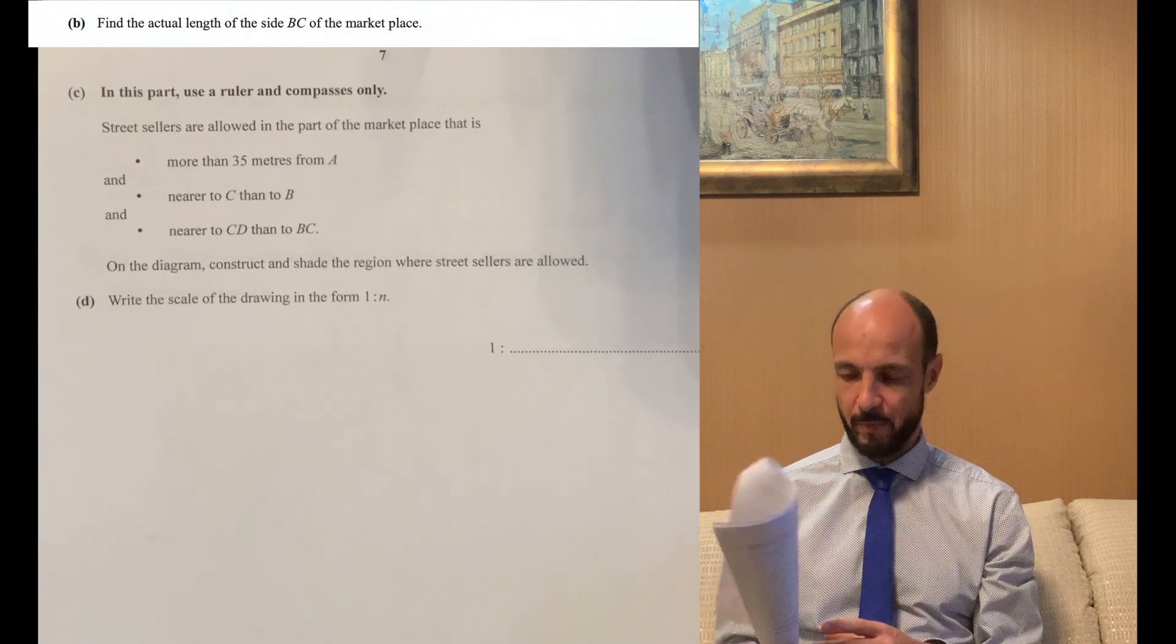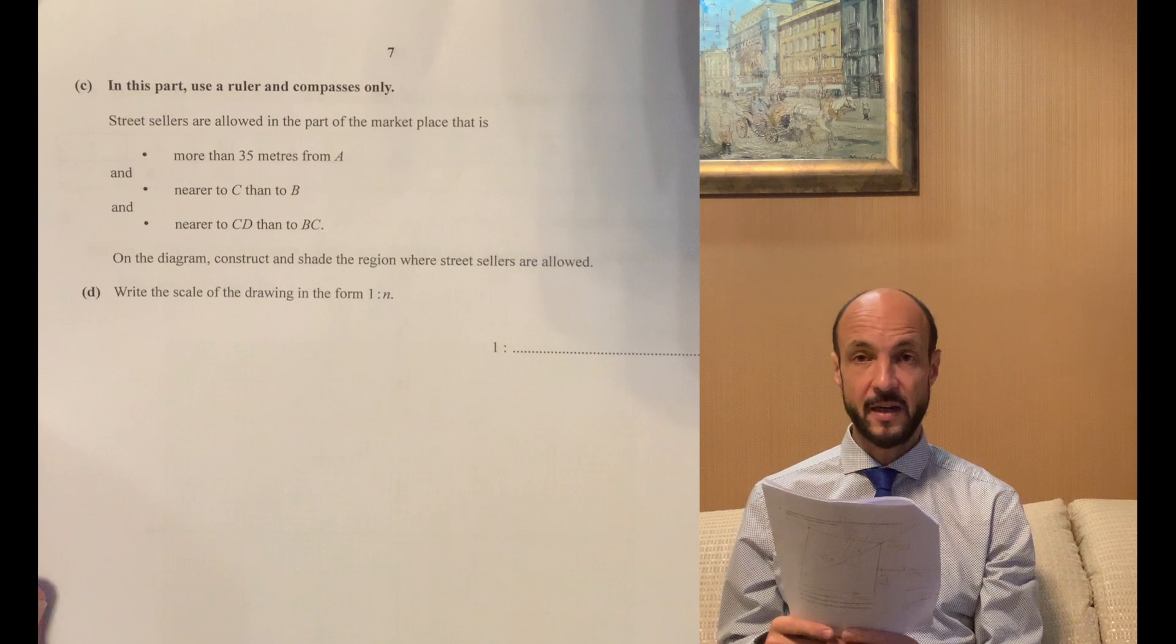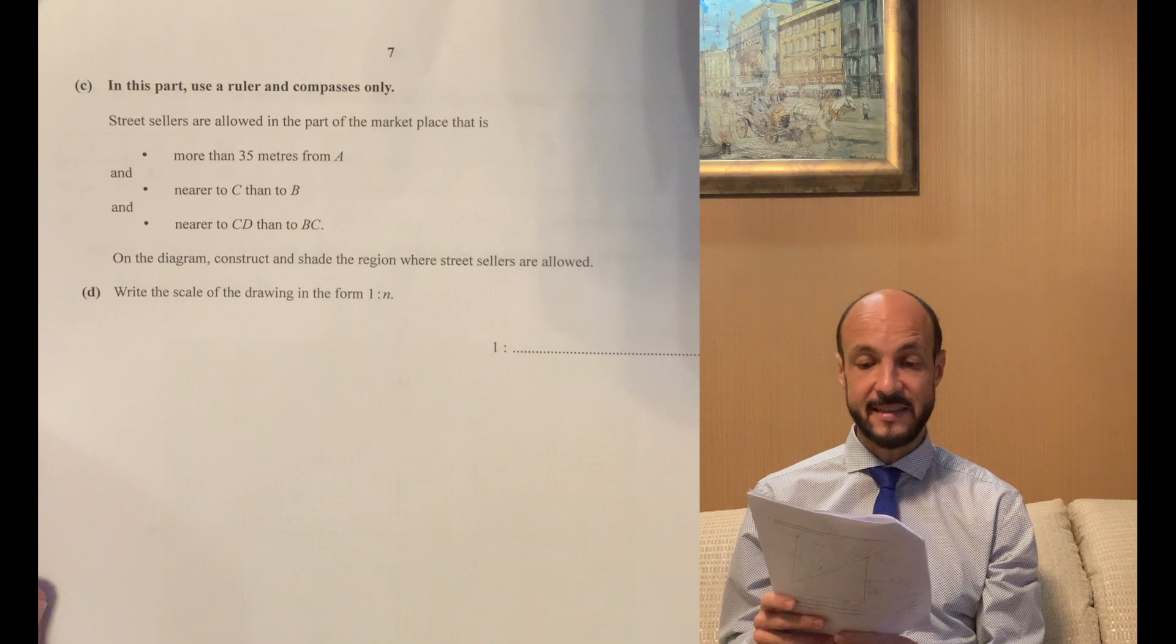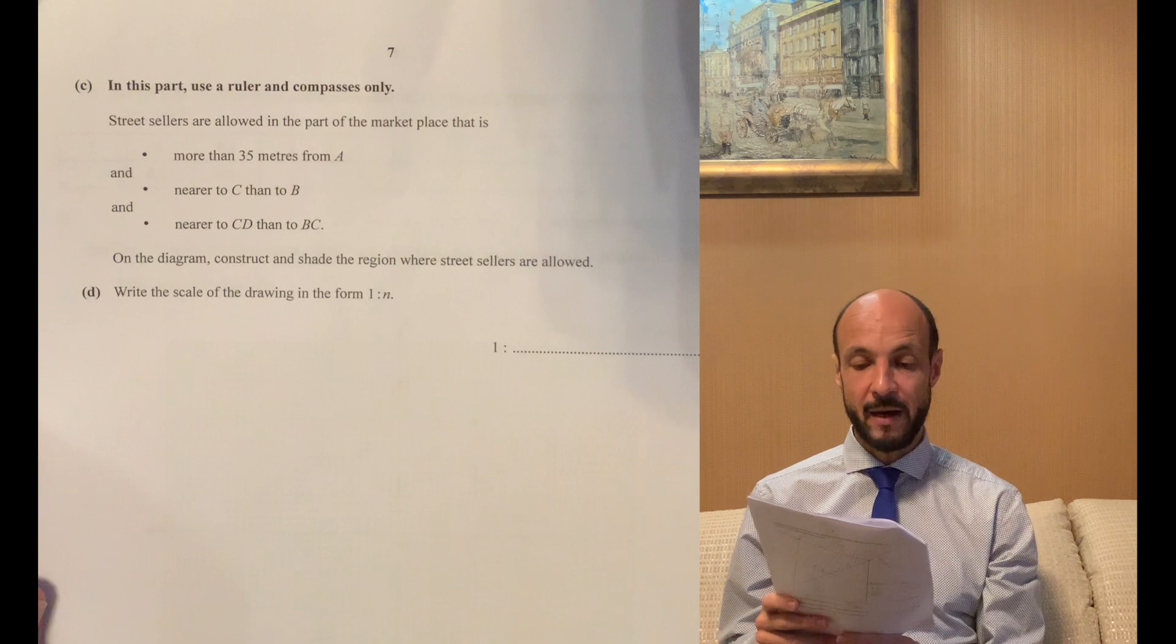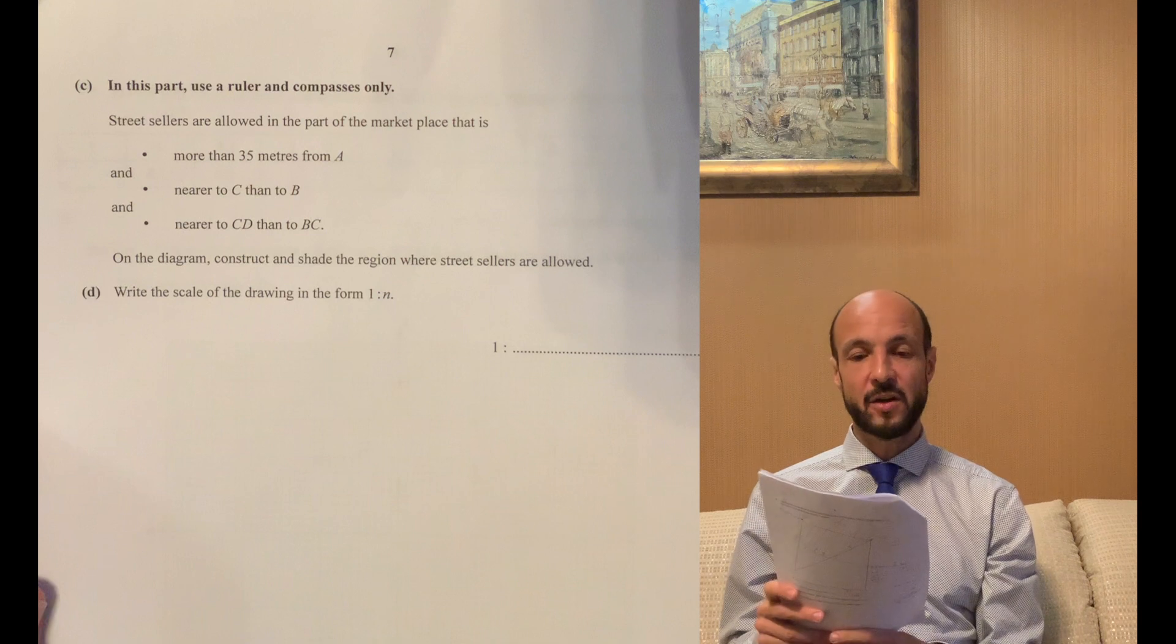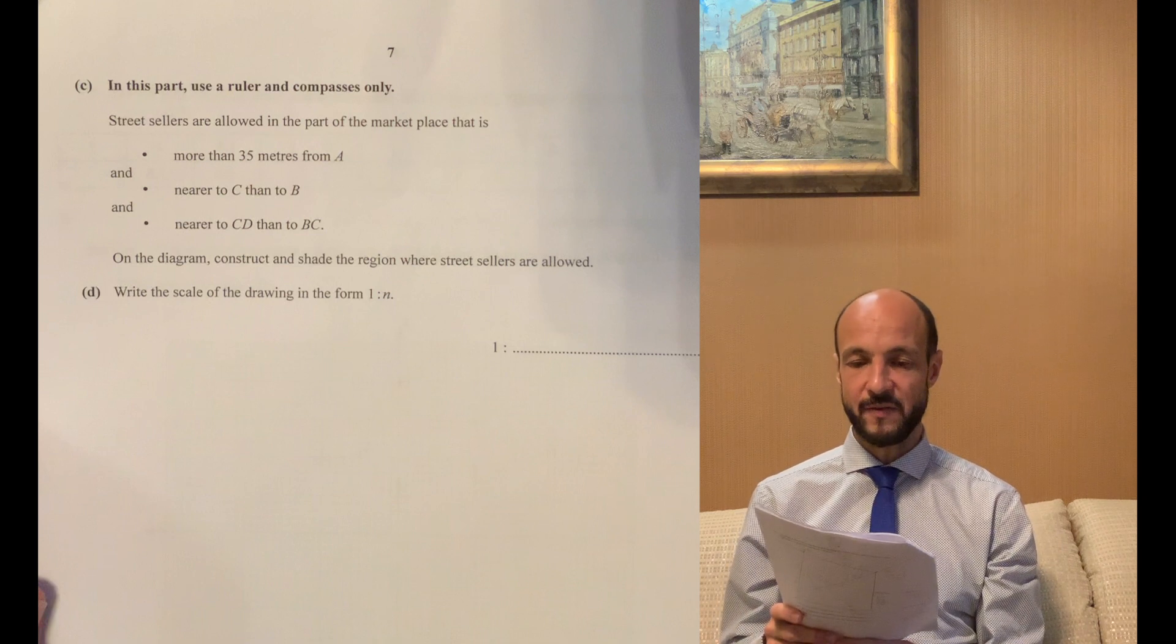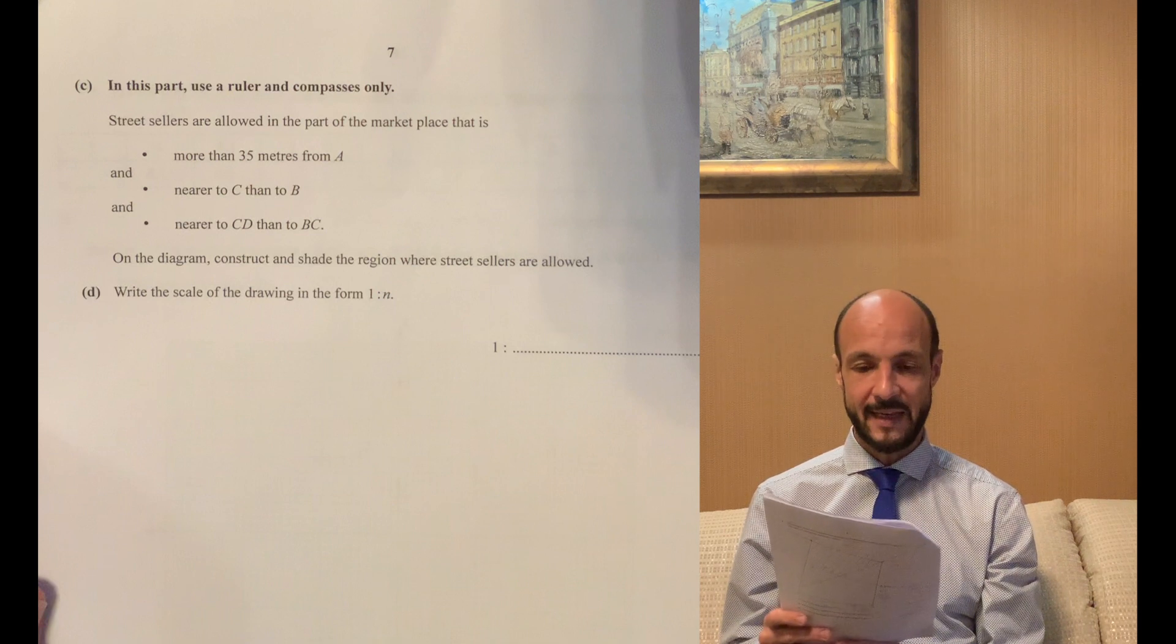And then part C, let's read carefully through it. In this part use a ruler and compasses only. Street sellers are allowed in the part of the marketplace that is more than 35 meters from A and nearer to C than to B and nearer to CD than to BC. On the diagram construct and shade the region where street sellers are allowed. So the first column, use a ruler and compasses only, what that means is we can't be using a protractor or drawing round things to measure angles or to find circles. It's a construction problem and there's very specific reasons for making that limitation.